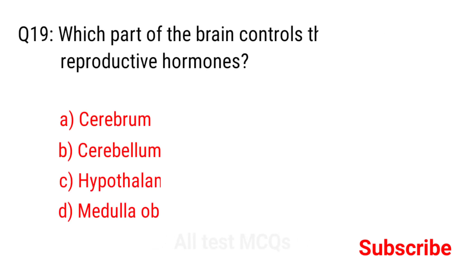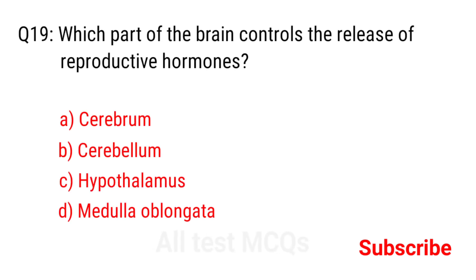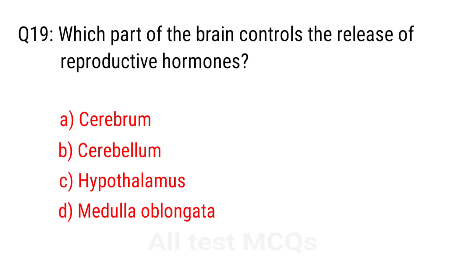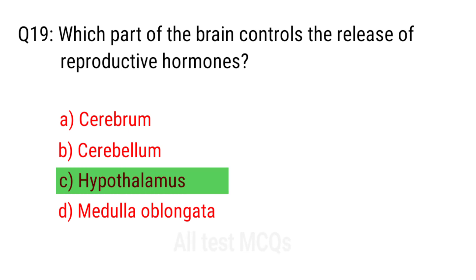Q19. Which part of the brain controls the release of reproductive hormones? The right answer is option C: Hypothalamus.